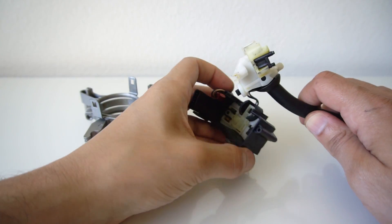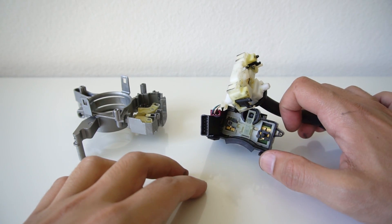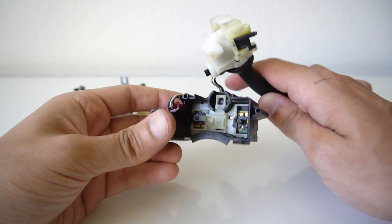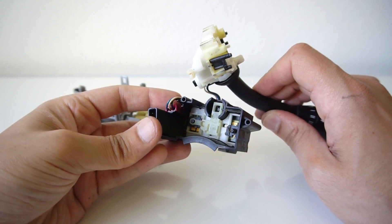The black portion of the housing also contained some kind of electronic board. I'm guessing something that controls or indicates the turn signal position. Everything in here looked okay with no damage that I could see.